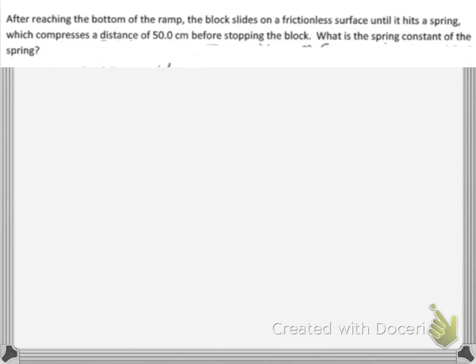Now, let's do one more part here. So when it reaches the bottom, the block slides on a frictionless surface. Awesome, that's nice. Until it hits a spring. It compresses a distance of 50 centimeters before stopping the block. What is the spring constant? Okay. So we got this picture here again. So the block is moving, and it's going to run to a spring. So we have kinetic energy. It's going that way on a frictionless surface. Hits a spring, and then we have spring potential energy in the opposite direction. So we have kinetic energy going to potential energy or spring potential, and we know the formulas for those as well.